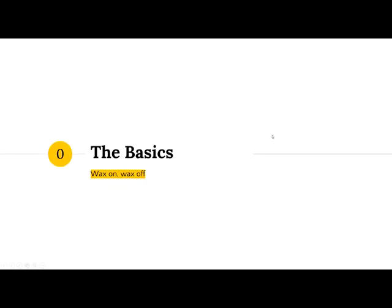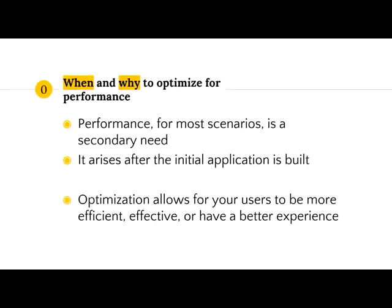Let's go through some of the basics of performance and Clojure. When and why do we need to optimize performance? In many cases, you won't really need to think about the scenarios I'm going to be talking about today. In most cases, it's a secondary need that arises after you build an application — after the primary function is there. Optimization usually comes up when your users tell you things are slow, or you yourself realize this is taking way too long, and you need a faster experience to meet some business need.